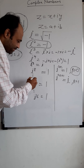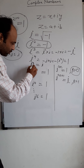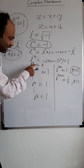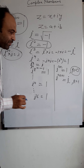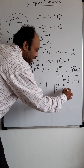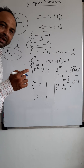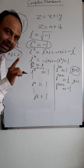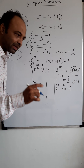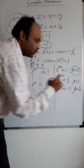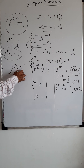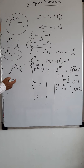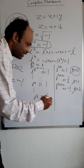Next, i to the power 6: i⁵ is i, so i⁶ = i into i = i² = minus 1. So i to the power 4n+2 is minus 1 — meaning if dividing the power by 4 gives remainder 2, the value is minus 1. For example, i^202: divide by 4, remainder is 2, so the value is minus 1.